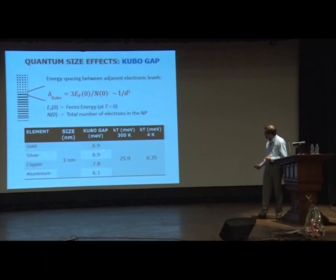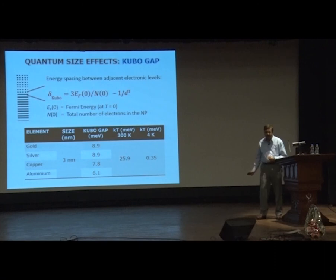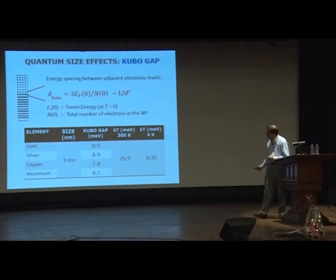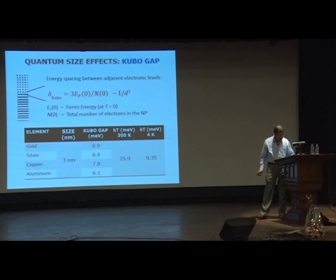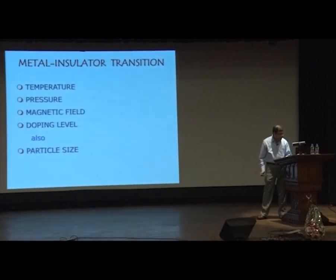The Kubo gap is of the order of 5 to 10 millielectron volts for most elements, but kT is about 25 meV at room temperature, so you have to go to something like 1 to 10 K to look at really strong effects of the Kubo gap. The rest of my talk will have to do with something like the Kubo gap.